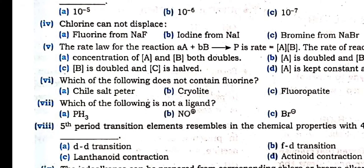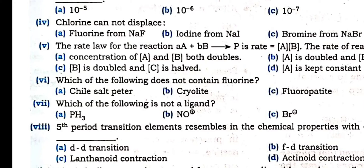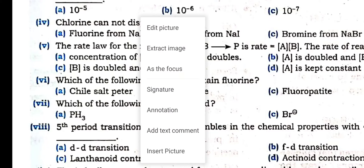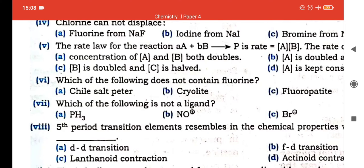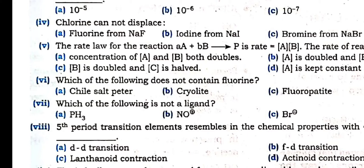Which of the following does not contain fluorine? That is Chile saltpeter — it does not contain fluorine. All others are fluorine ores. The ore part is related to electrochemistry. Some questions may arise in our board exam also from the non-evaluation part. At least you have to write the question number so that marks will be credited to you.